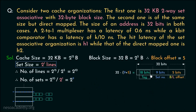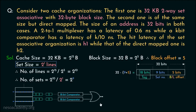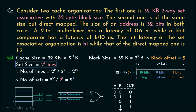Since we are using 18 bits for tags and it is a 2-way set associative cache, we need two 18-bit comparators. The outputs of these two comparators are fed into an OR gate. For a two-input OR gate: inputs 0,0 give output 0; inputs 0,1 or 1,0 give output 1; and inputs 1,1 give output 1.